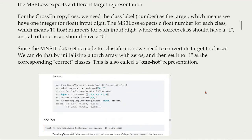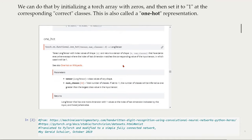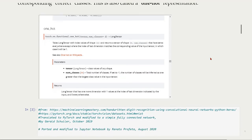PyTorch has a function called one_hot that takes a long tensor with the index value of shape star and returns a tensor of shape star and num_classes, with zeros everywhere except where the index of the last dimension matches the corresponding value of the input tensor. So it does exactly what we want to do.